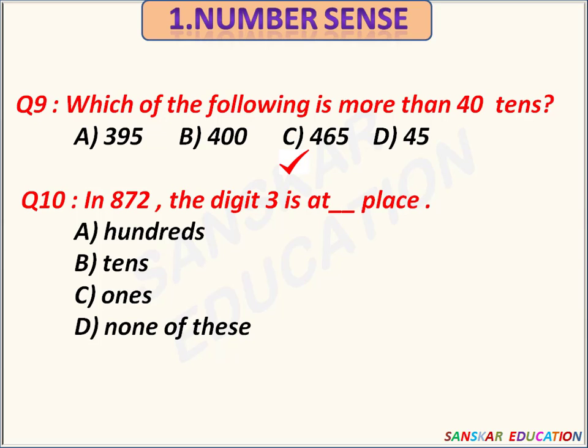In 872, the digit 8 is at dash place. Option A is the correct answer.